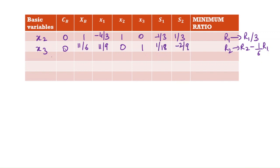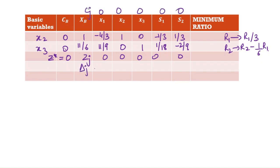Calculating z-star at this point: z-star = 0. zj = 0, cj = 0, so delta j = 0, 0, 0 for all variables.